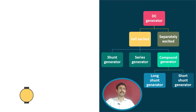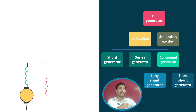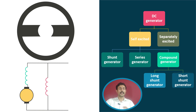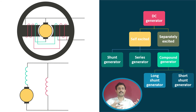In a long shunt generator, there is an armature and one section of the field winding is connected in series with the armature — you can see this in this manner. The other half of the field winding is connected in parallel with the combination of the series field winding and the armature winding. You can observe the same thing on screen right now. In the cross-sectional view, the armature and series field winding connected in series are shown like this, and the shunt field winding is connected in this manner. So this is the connection diagram and winding diagram of the long shunt generator.